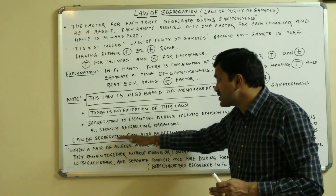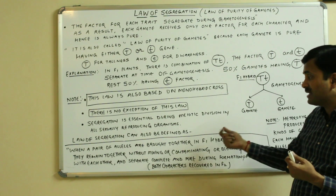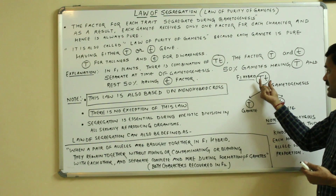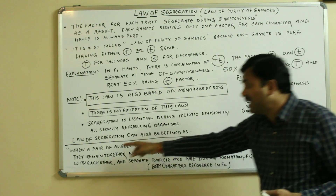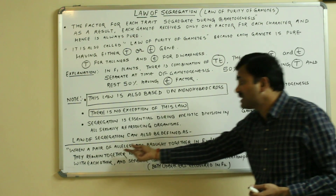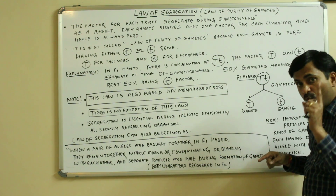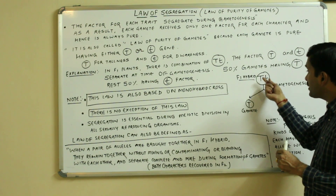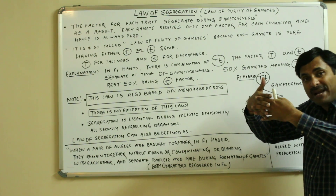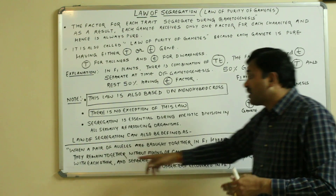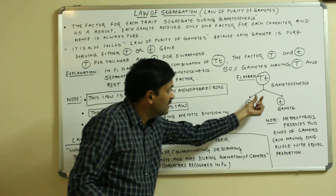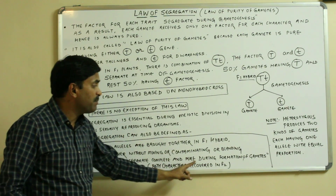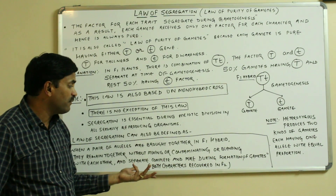The law of segregation can also be defined as follows: when a pair of alleles is brought together in an F1 hybrid, this pair remains together — they co-exist together — but they are not mixed up with each other. They are not contaminating each other or blending with each other. And at the time of gametogenesis, they separate completely and purely.